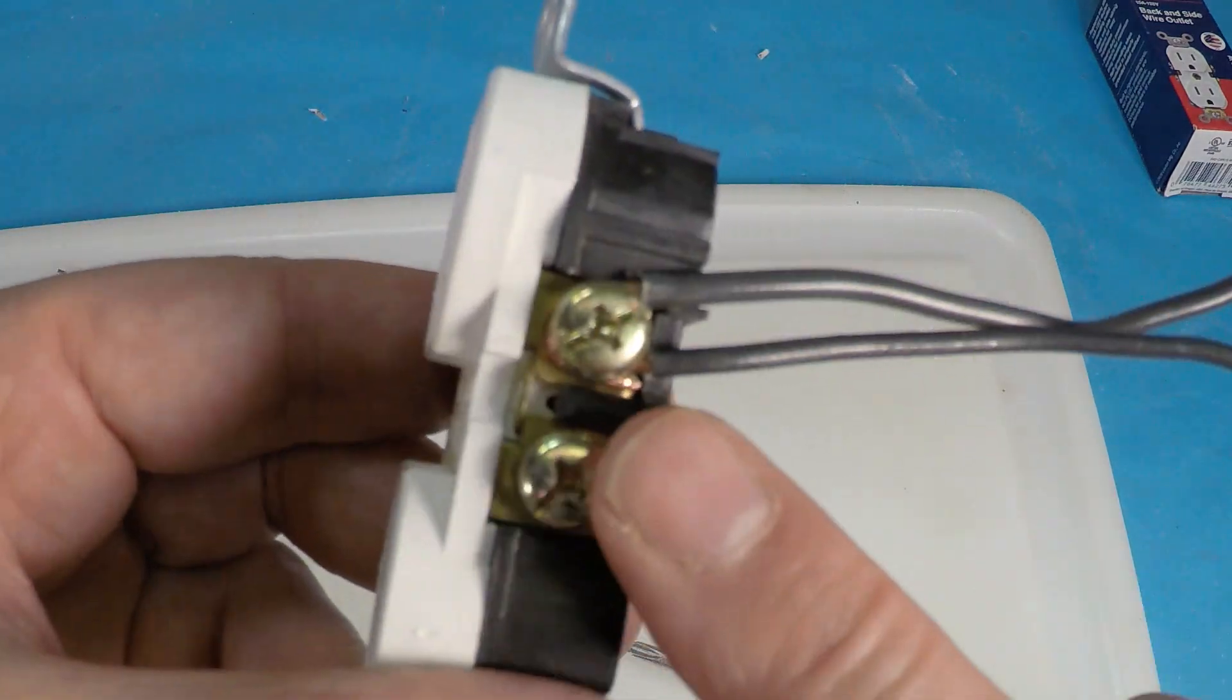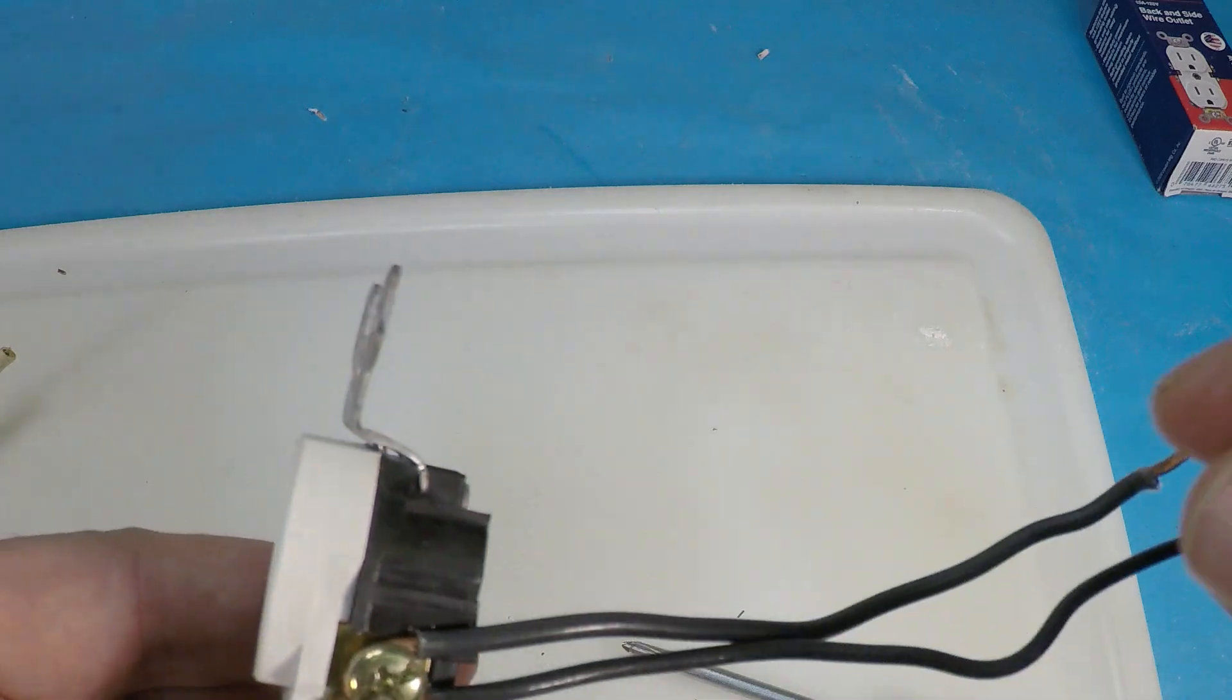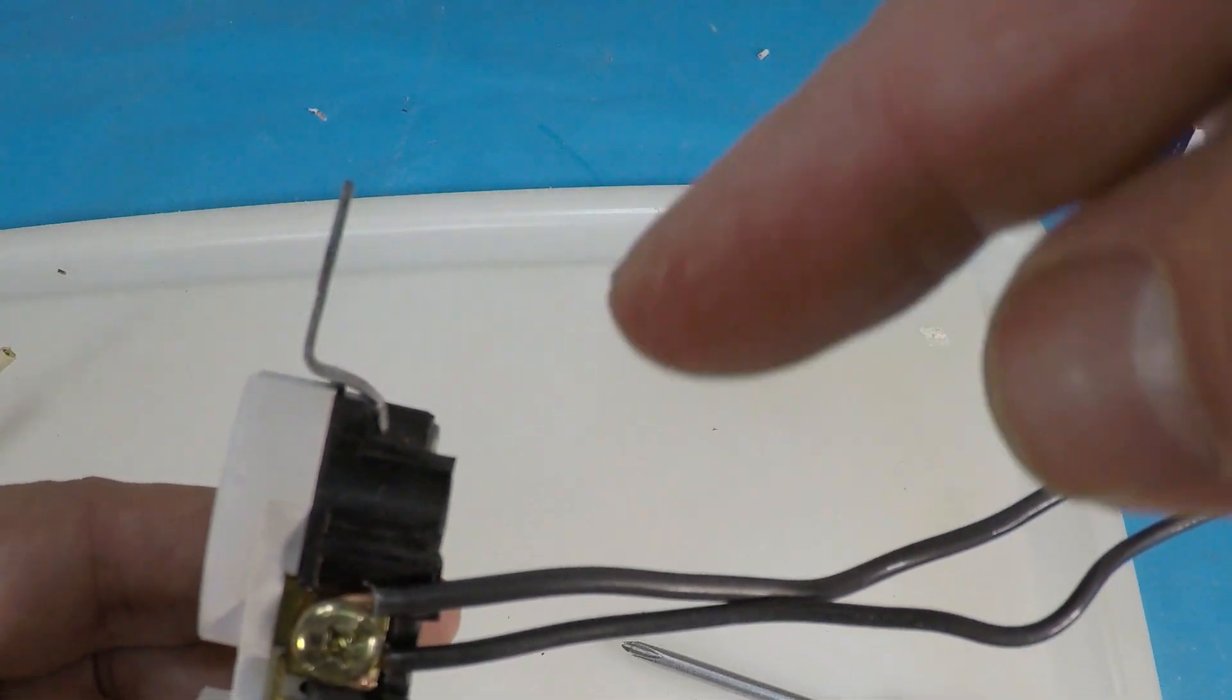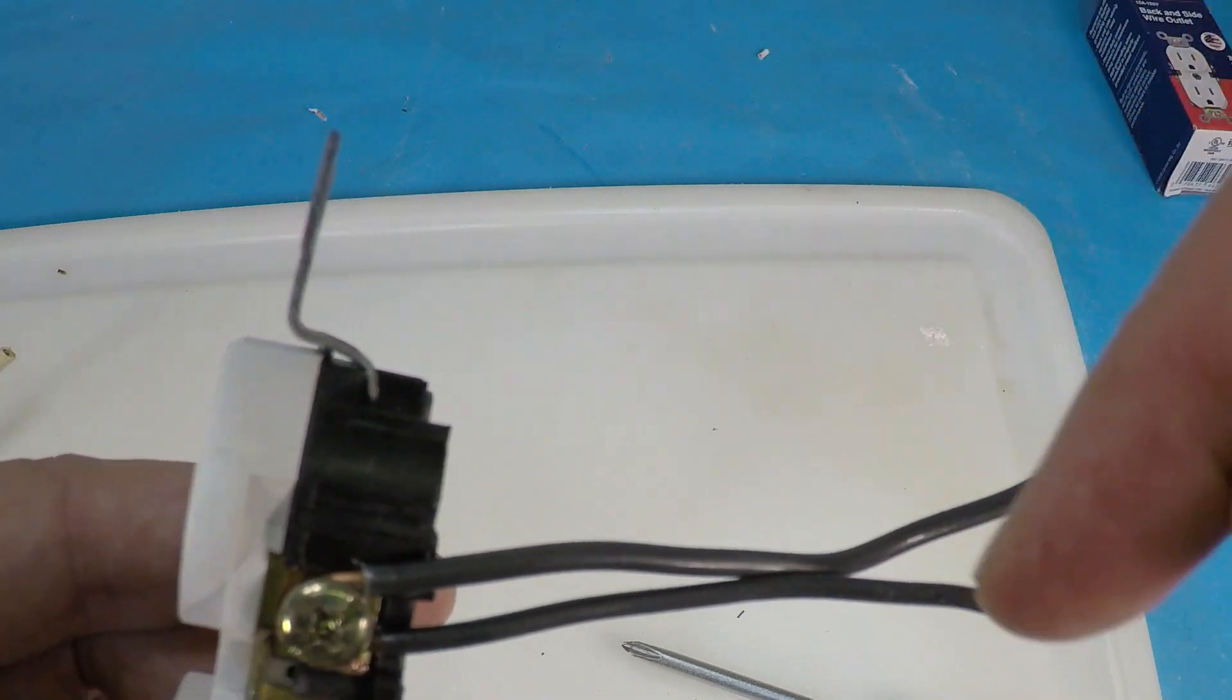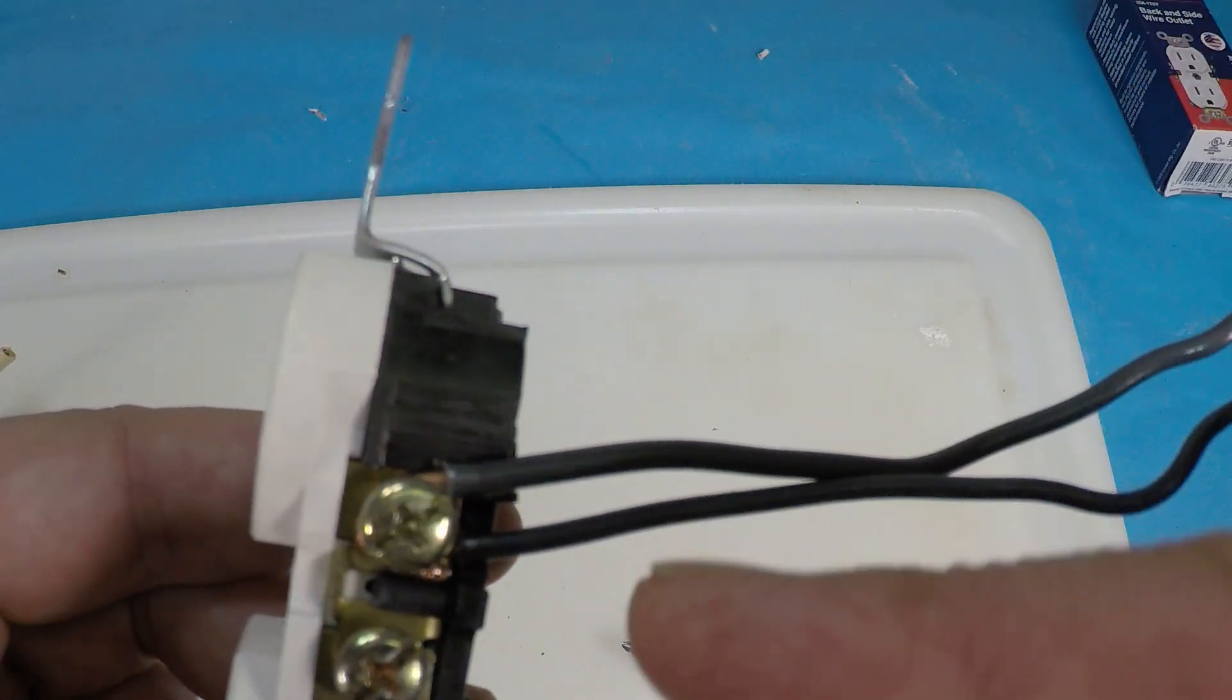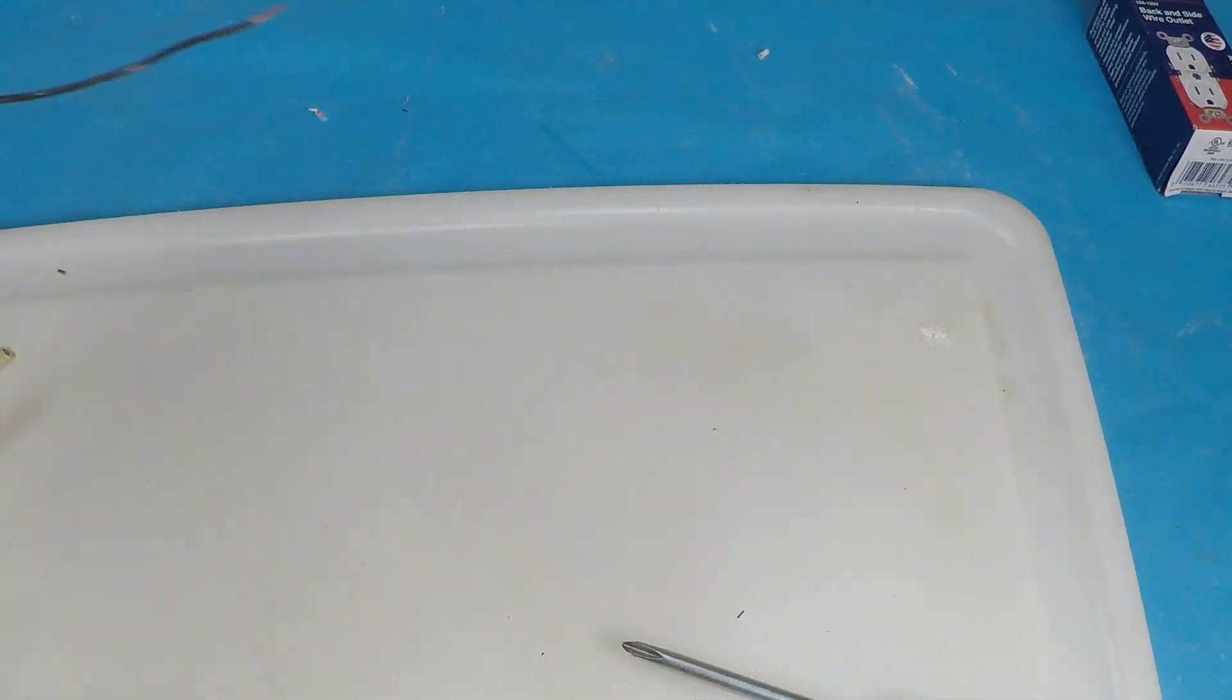If you're trying to get power to another line, then do the right thing and get a wire nut out here and then pigtail it. Have one going here and then one going to wherever it is that you're trying to take one of these wires to.